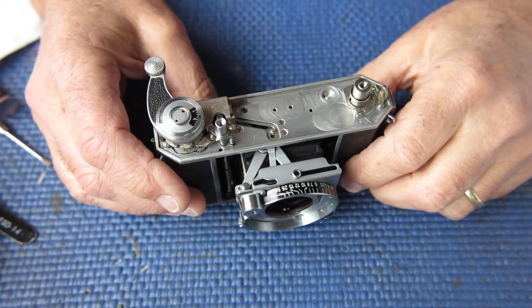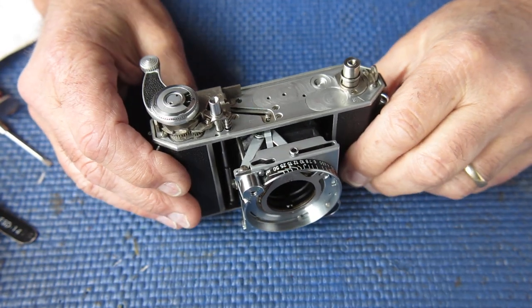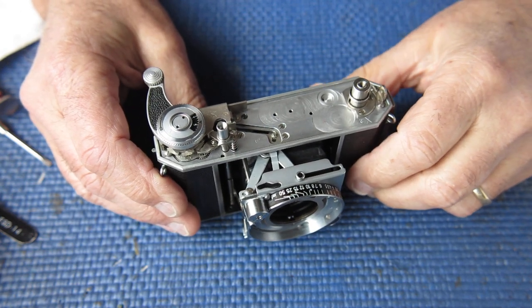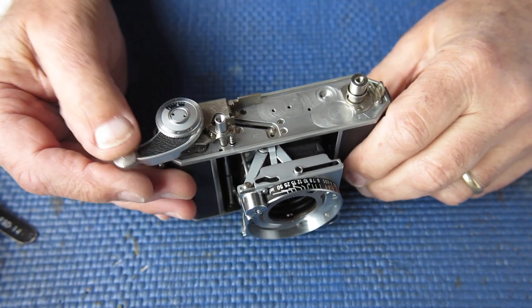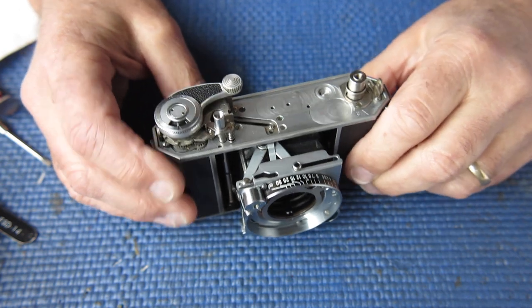Our next task is to clean and refit the range finder to the top of the camera body. So I'll pop this to one side and we'll get on to that.